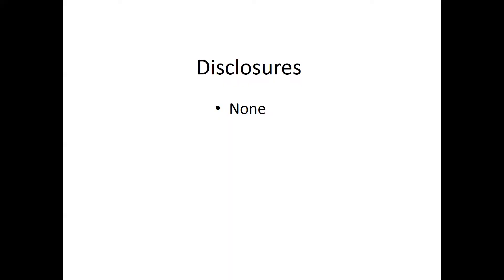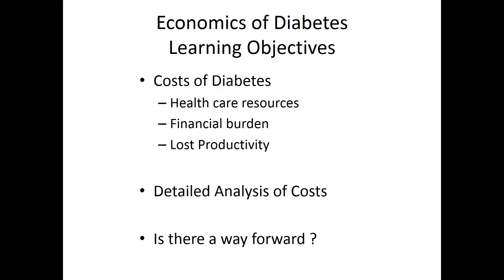That must be 99% with a positive p-value. So diabetes is an important thing for absolutely everybody. I have no disclosures. Some of the learning objectives include the cost of diabetes, healthcare resources, the issue of financial burden and lost productivity. We'll get a little dive into the analysis of costs, and then ask: is there a way forward out of this?